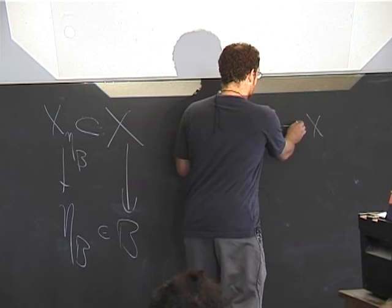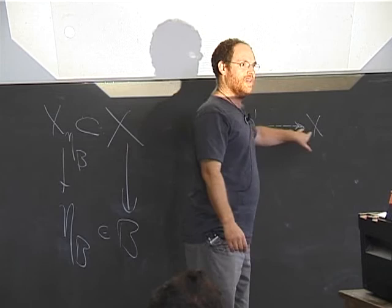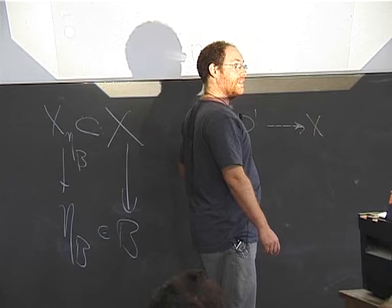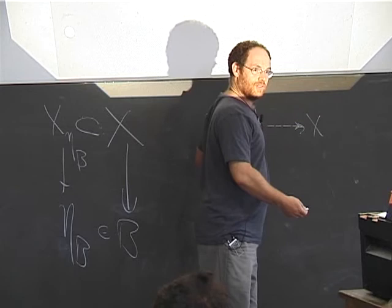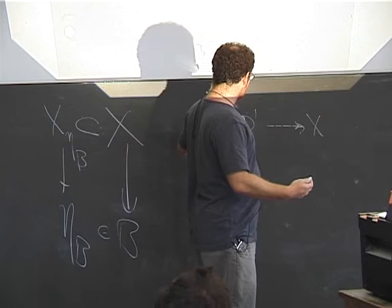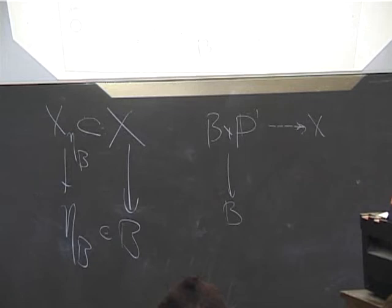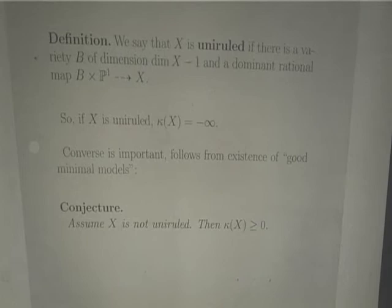Another thing that is easy to see: since this is dimension n minus one, this dominant rational map means it is generically finite. It's easy to see that the Kodaira dimension, if you take a generically finite cover, can only grow — because any differential form here pulls back to a differential form here. So the space of differentials only grows. If this has Kodaira dimension minus infinity, this must have Kodaira dimension minus infinity. So if your variety is covered by P1s, the Kodaira dimension has to be minus infinity.